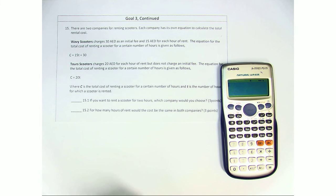Tours charges 20 dirhams for each hour of rent but does not charge an initial fee. The equation for the total cost of renting a scooter for a certain number of hours is given as follows: C equals 20T. C is the cost of renting a scooter for a certain number of hours and T is the number of hours for which the scooter is rented.